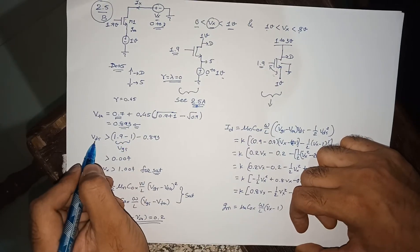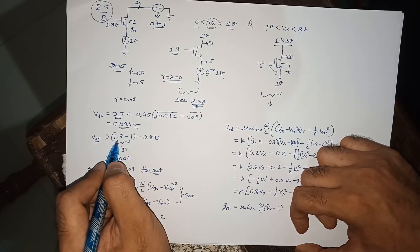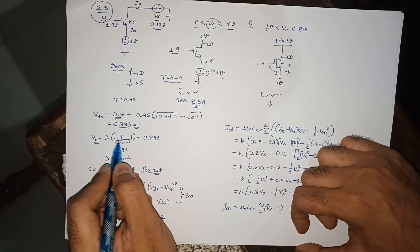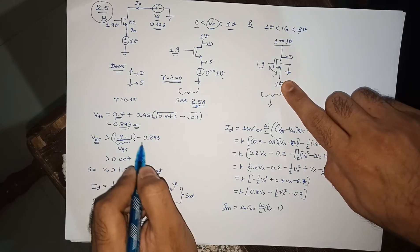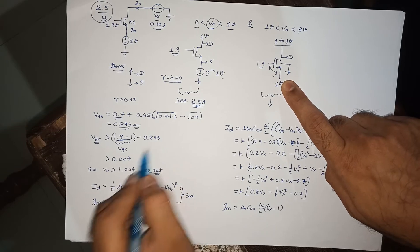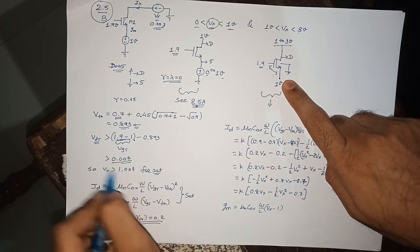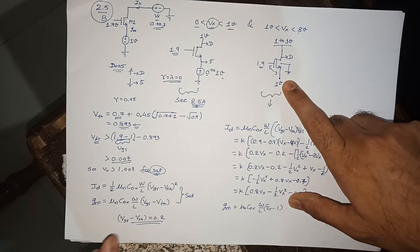What will happen is VDS is greater than VGS, that is 1.9 minus 1 volt. If you will see, 1.9 minus 1 is VGS minus 0.893, which will be 0.007. For this condition, your MOSFET will be in saturation region.